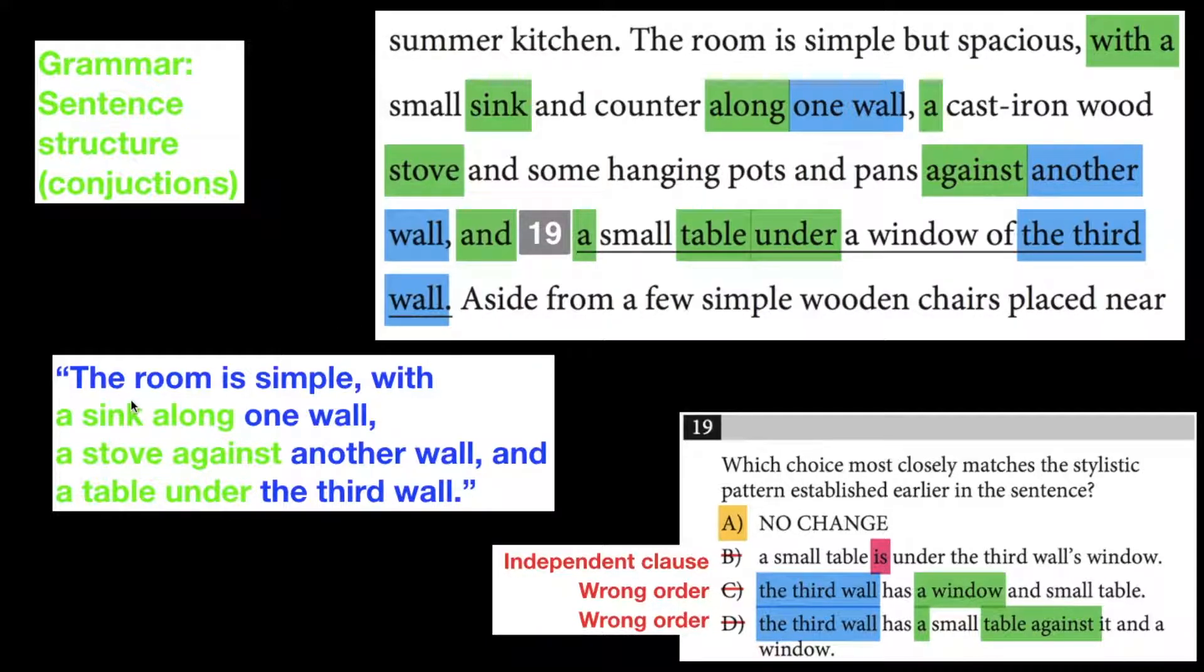If you simplify it down just a little bit, what you realize is that it introduces the room. So the room is simple, with, and then you talk about three walls. A sink along one wall.